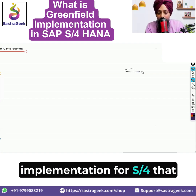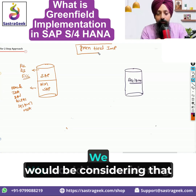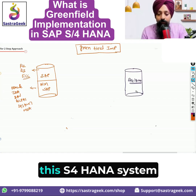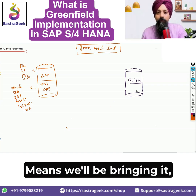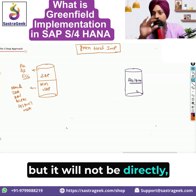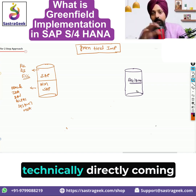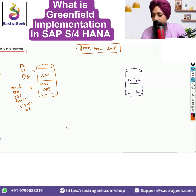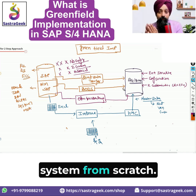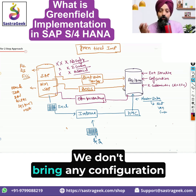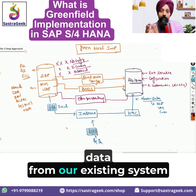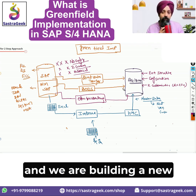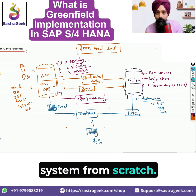What is the greenfield implementation for S4? We consider that this S4 HANA system is a new system. We will not bring anything from the legacy system — or if we do, it will not directly come into S4 HANA. We are implementing a system from scratch. We don't bring any configuration, Z customization, or historical data from our existing system. We are building a new system from scratch.